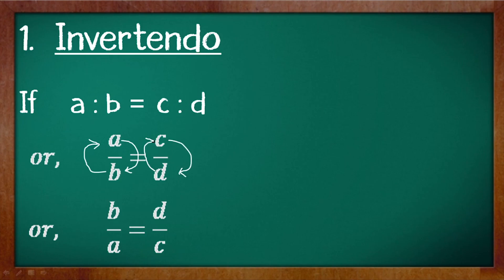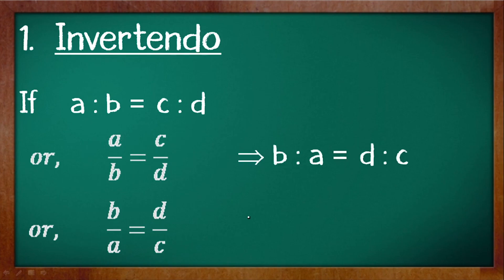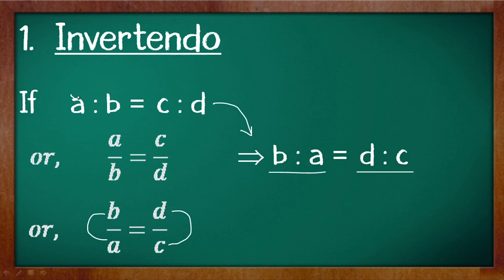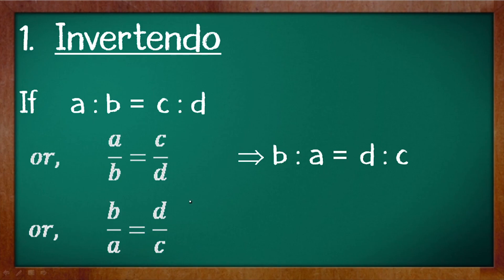So after inverting we get b by a is equals to d by c. Writing that in ratio form we get b is to a is equals to d is to c. Comparing the first and the last ratio, we see that the antecedent and the consequent of both ratios have interchanged their positions. This property is known as invertendo.